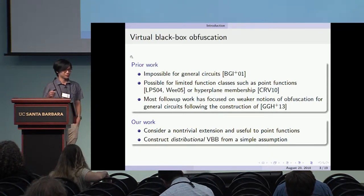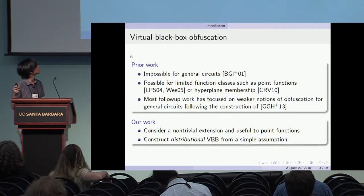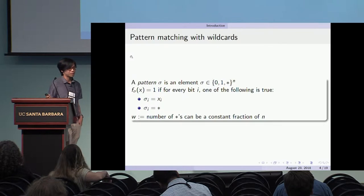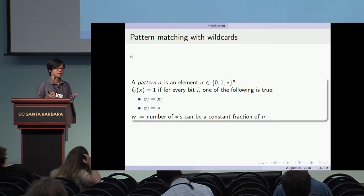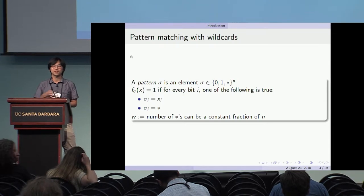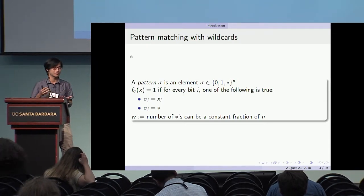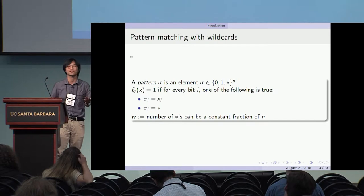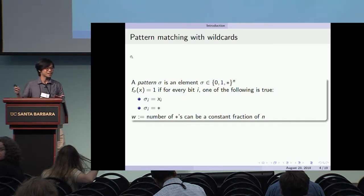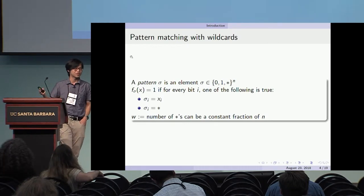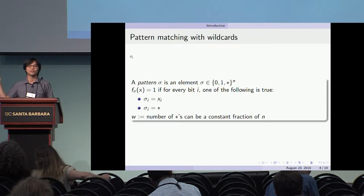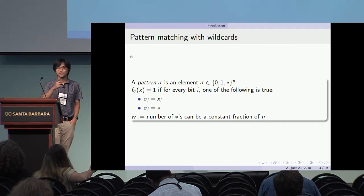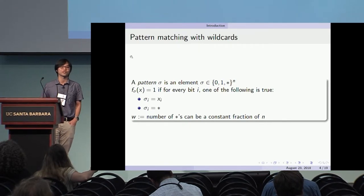Specifically, we're going to use the notion of distributional VBB, and we're going to look at the following function class, which we call pattern matching with wildcards. You're evaluating an input on an n-dimensional Boolean vector. A pattern is an n-length string where the character set is zero, one, or star. Without the star character, this is exactly a point function. With the star character, we essentially ignore the dimensions that are stars — you can think of it as projecting out those dimensions and then doing a point function on the remaining.